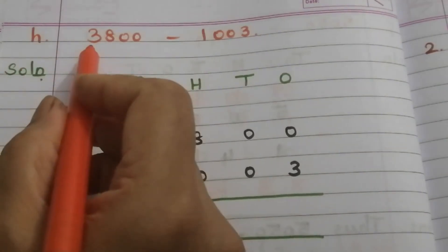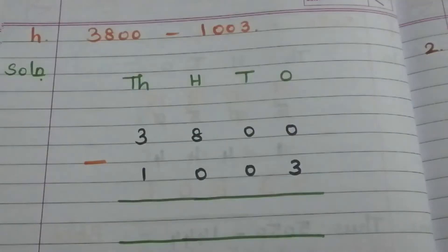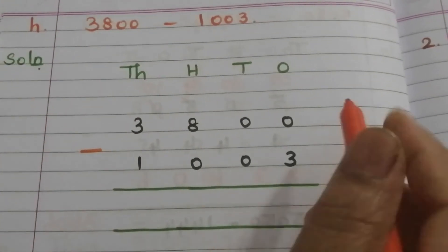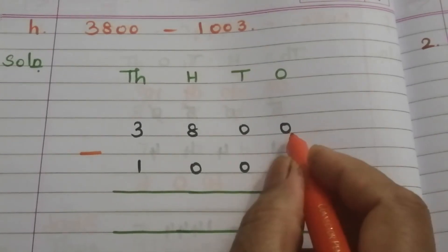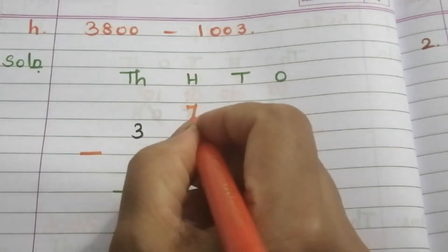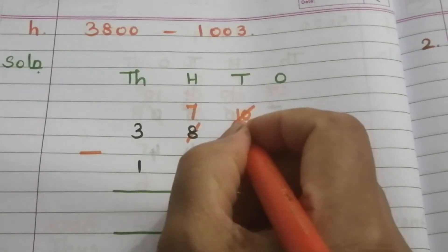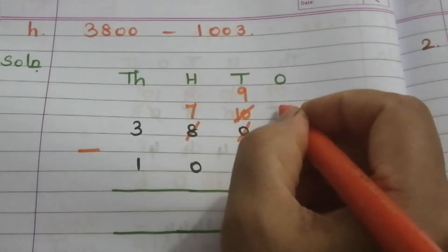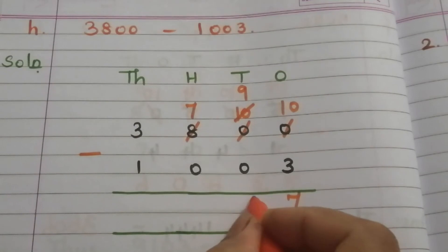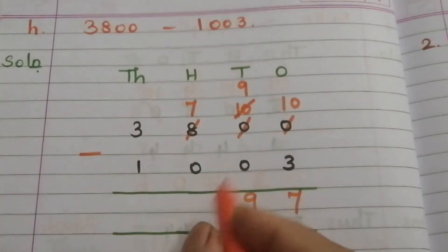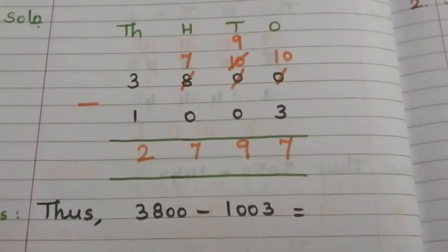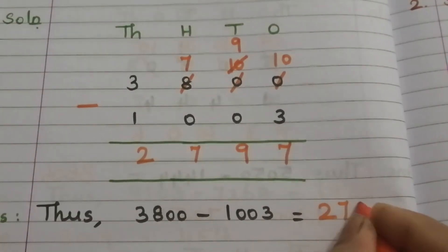Part H, the last problem: 3800 minus 1300. After writing these two numbers vertically, we start subtraction. We can't subtract 3 from 0, so move to the next place — here also 0, so move to the hundreds place. 8 becomes 7 and this 0 becomes 10. Borrow from this 10 — it becomes 9 and this 0 becomes 10. 10 minus 3 is 7, 9 minus 0 is 9, 7 minus 0 is 7, 3 minus 1 is 2. The answer is 2797.